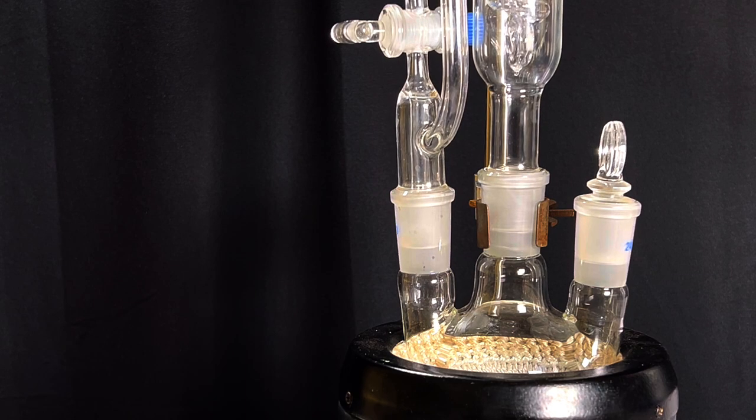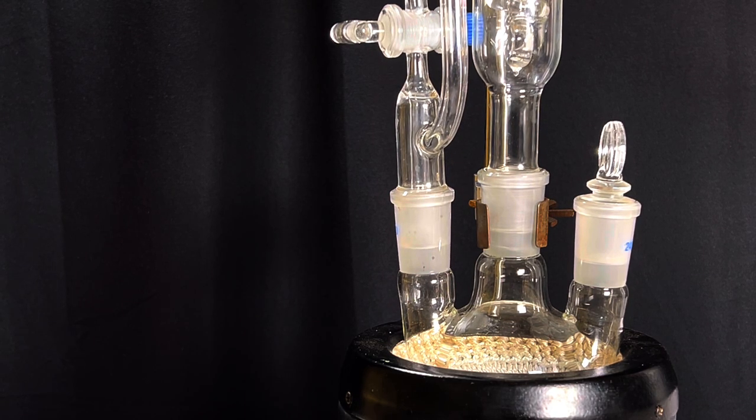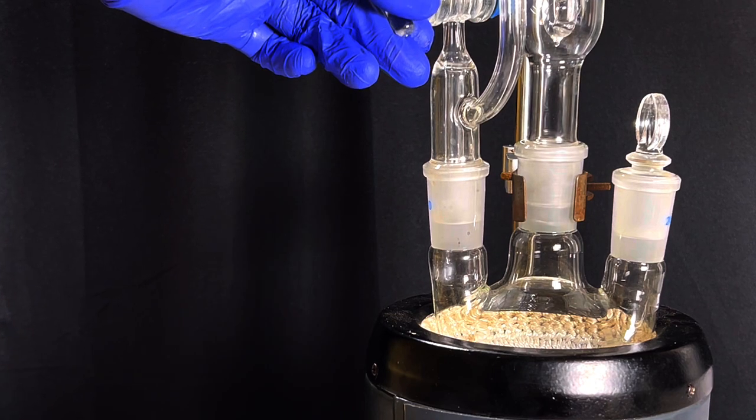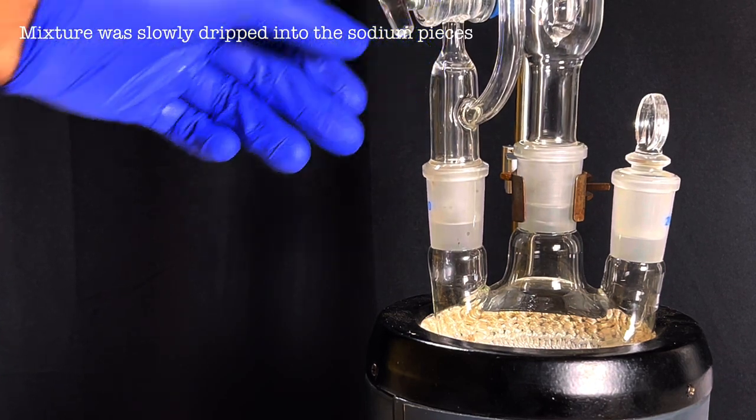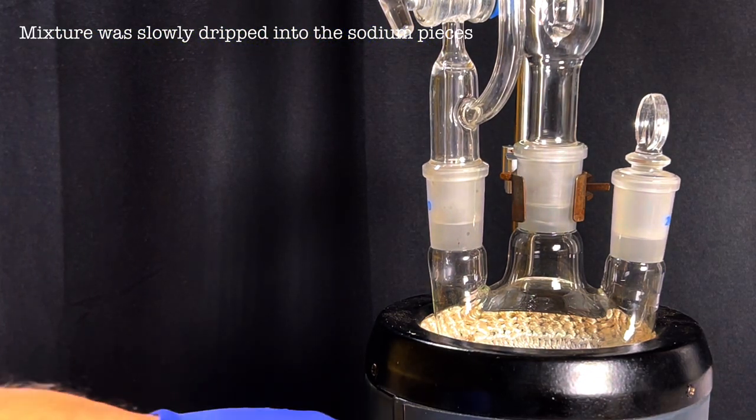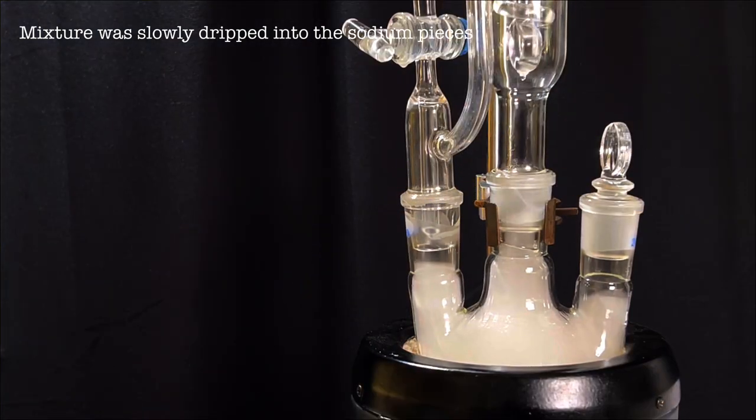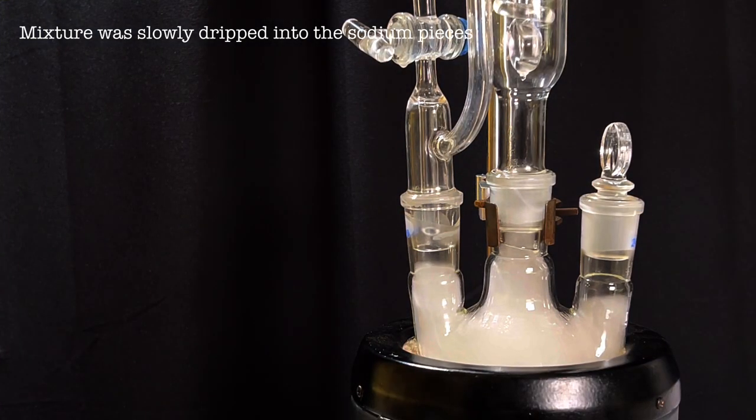Cold water was circulated in the Dimroth condenser and the knob of the addition funnel was turned to slowly drip the mixture to the sodium in the flask. Soon you will see dense white fumes in the flask and the flask starts getting very hot.